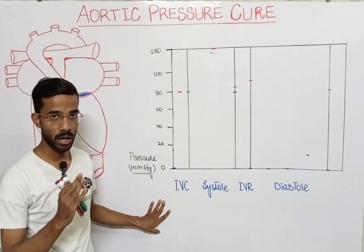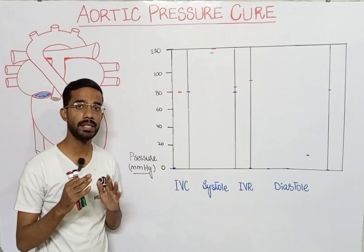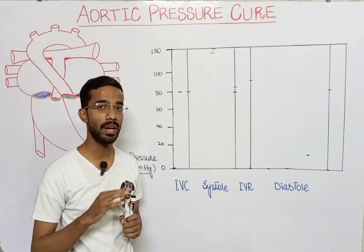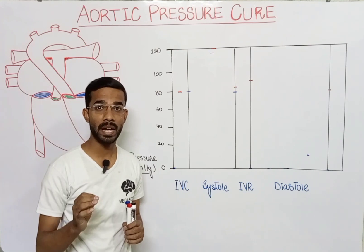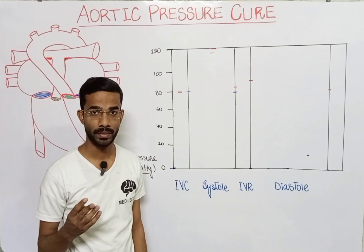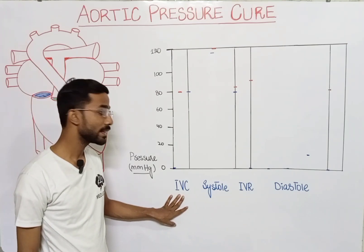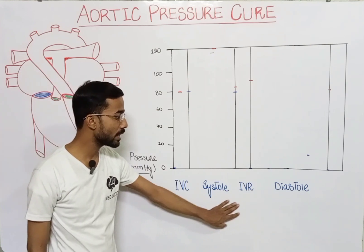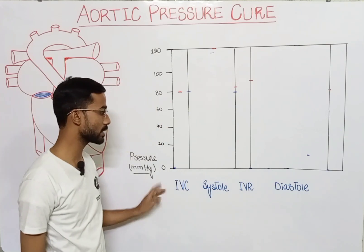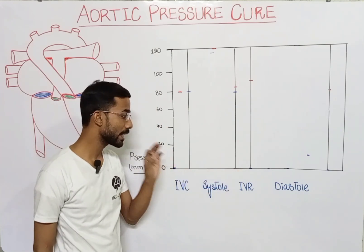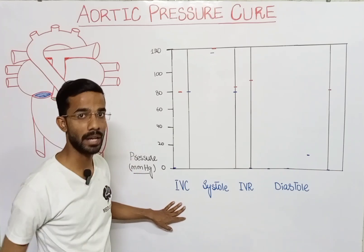Before we start, you should know that the cardiac cycle consists of two phases — systole and diastole. However, we should clarify that the cardiac cycle basically consists of four phases: isovolemic contraction, then systole, then isovolemic relaxation, and last is diastole, and that process continues again and again. So keep in mind there are basically four phases, not just two.